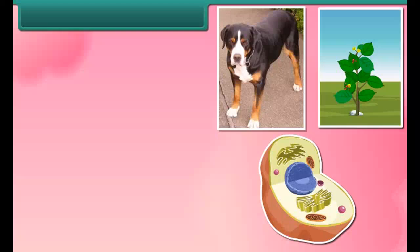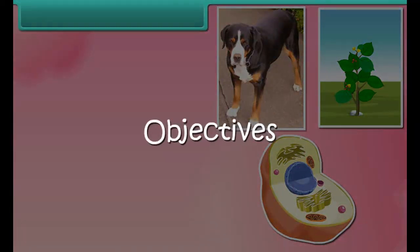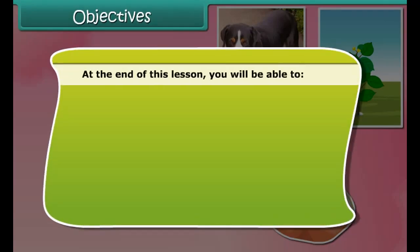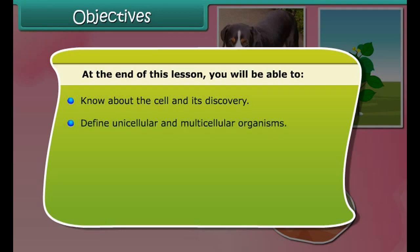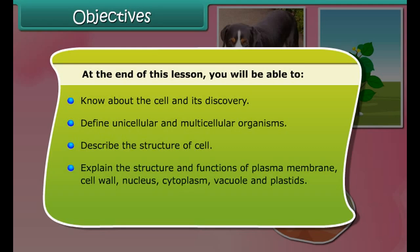At the end of this lesson you will be able to know about the cell and its discovery, define unicellular and multicellular organisms, describe the structure of a cell, explain the structure and functions of cell membrane, cell wall, cytoplasm, nucleus, vacuole, and plastids, and differentiate between the plant and animal cell.